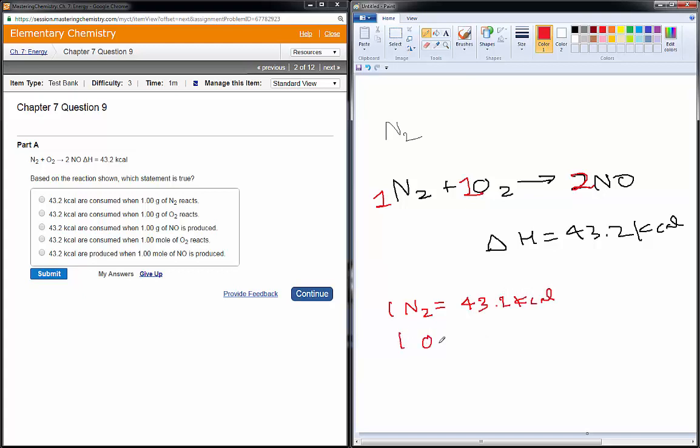Same thing with 1 O2 would require 43.2 kcals to react. And if I formed two NOs, that would require 43.2 kcals for using those coefficients there.